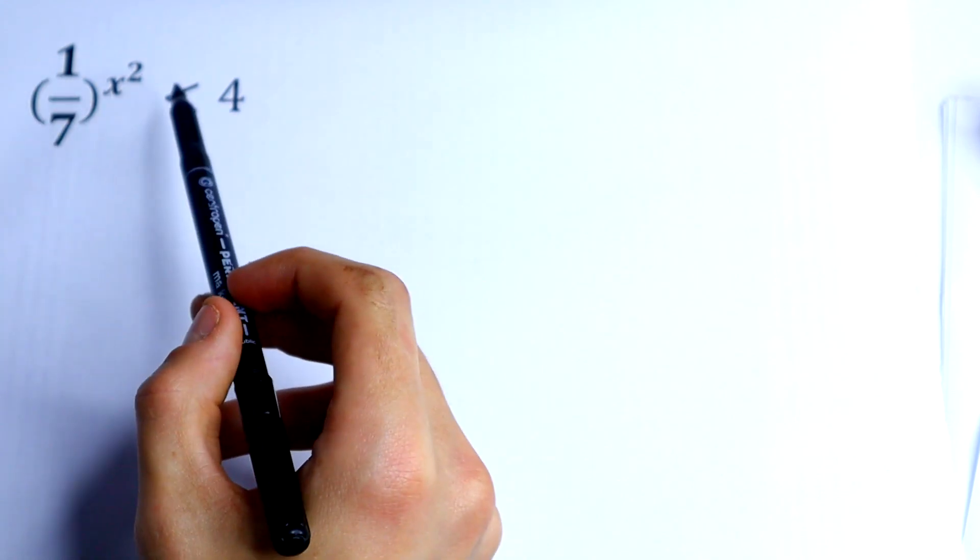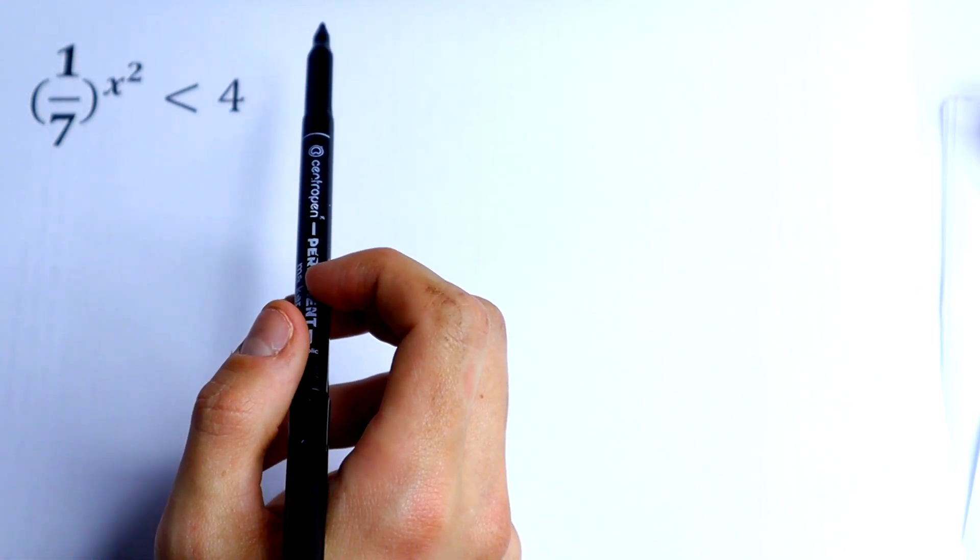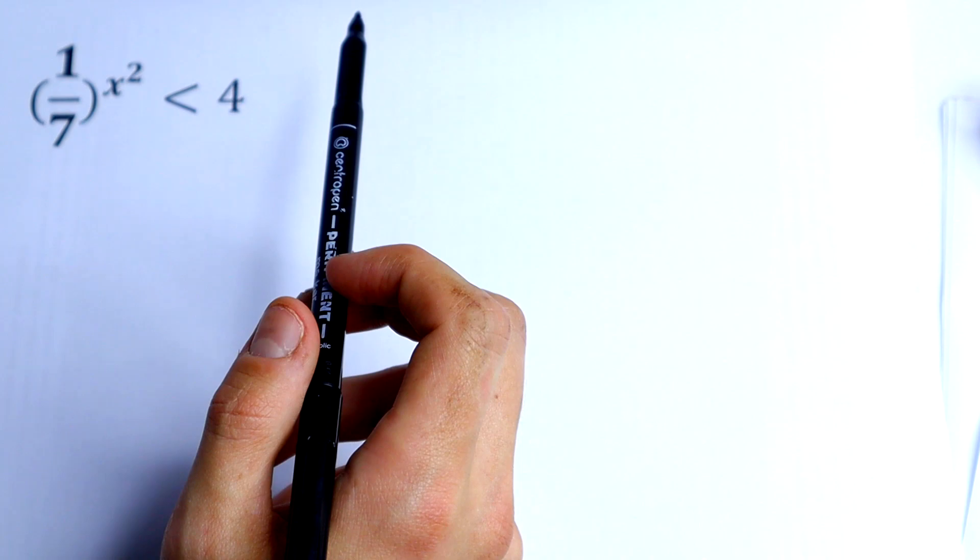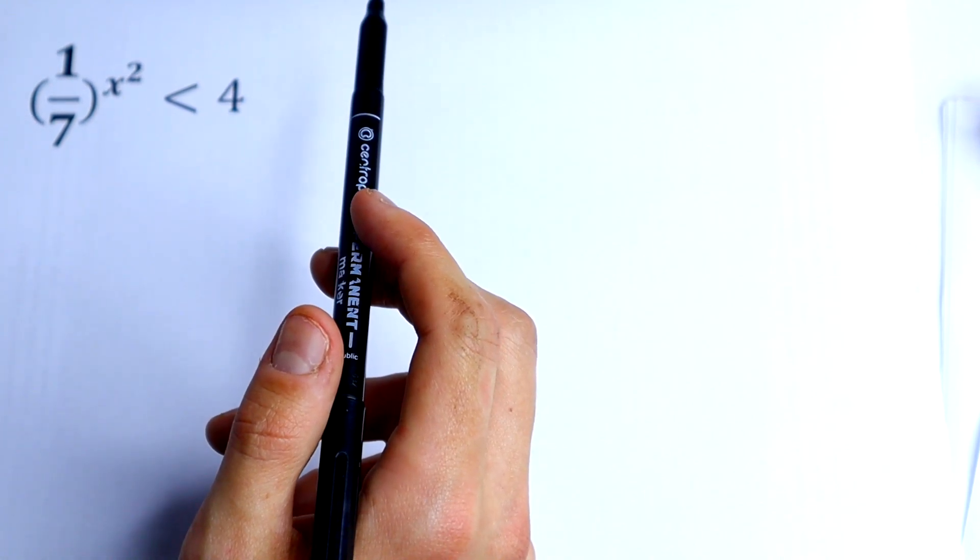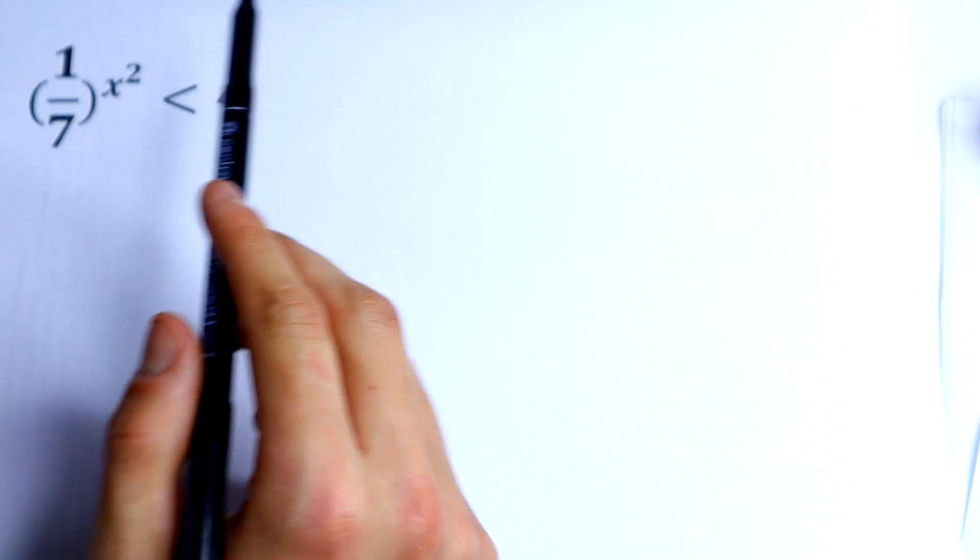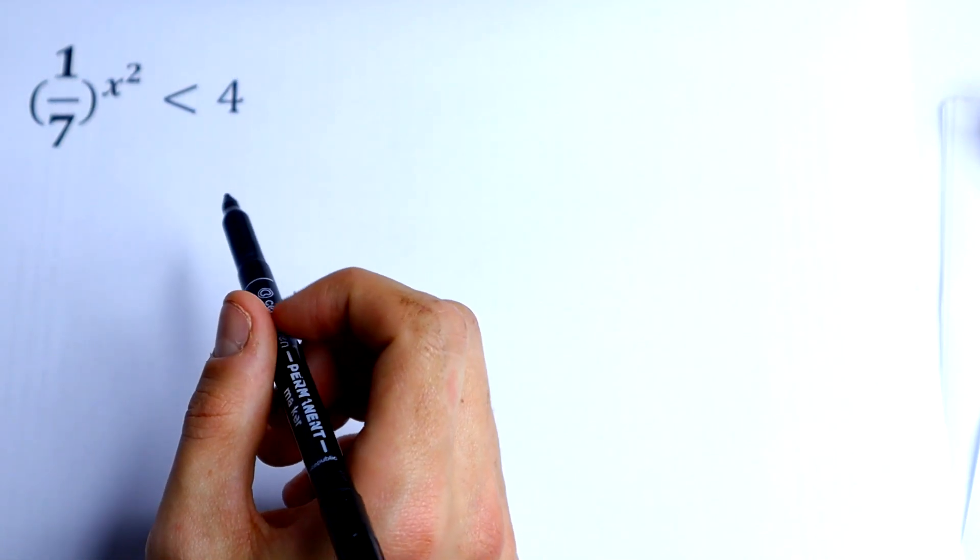We have different bases, we have different powers. So the main idea to solve this is to use log and then to compare our right and left.